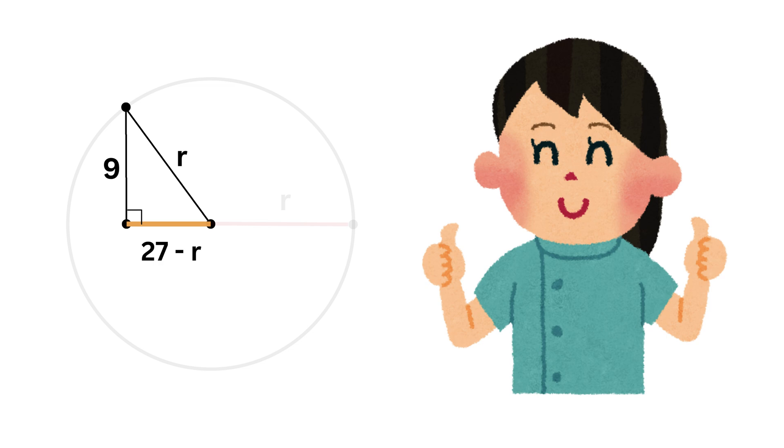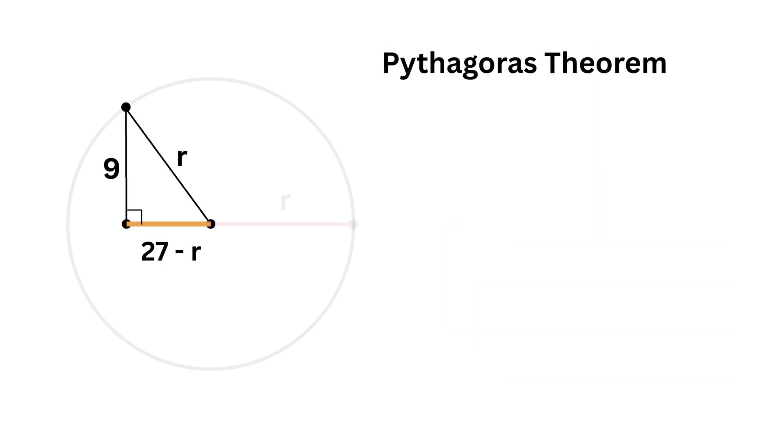Yeah, right. We will be using our favorite Pythagorean theorem and we get r squared equals 9 squared plus 27 minus r whole squared. Now this is of the form a minus b whole square whose expansion is this, isn't it?